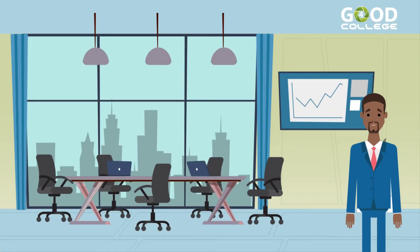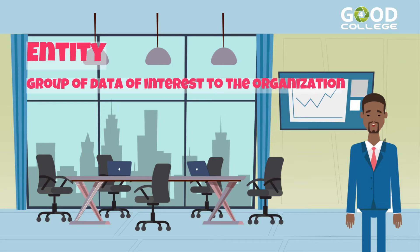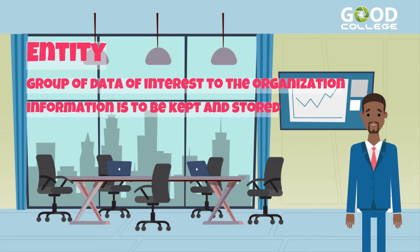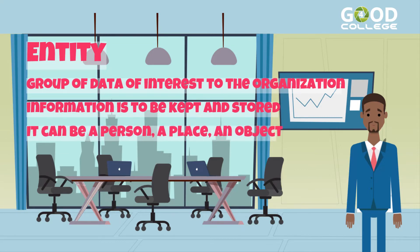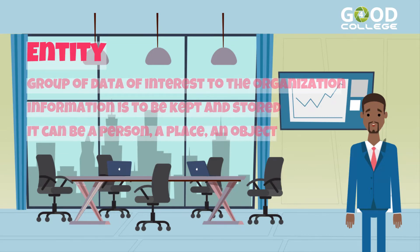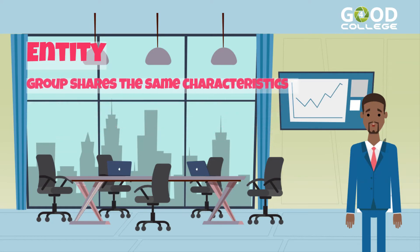The first element that must be identified in the model is the entity. An entity can be defined as a group of data of interest to the organization, in which the information is to be kept and stored. It can be a person, a place, or an object. A group is someone or something that shares the same characteristics.